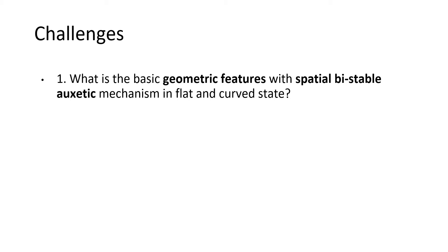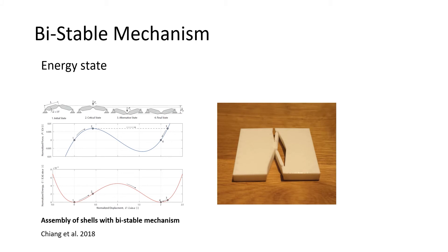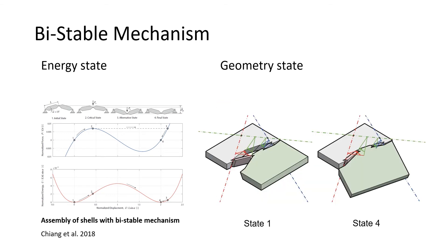First, let's take a look at the bistability, which is also called snap-through buckling. Chiang and his co-workers graph the energy displacement graph of a planar bistable unit. The stable states are corresponding to the local minimum of the system's energy. The bistable units can also be made into non-planar.